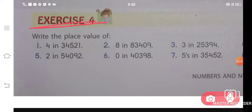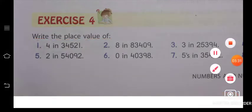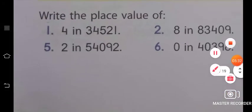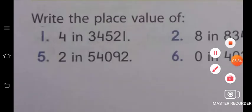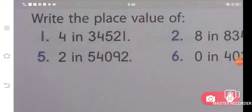Let us concentrate on Exercise 4: 'Write the place value of the following.' To solve these questions, you will write the digit and identify its place. You write out: ones place, tens place, hundreds place, thousands place, and ten-thousands place.